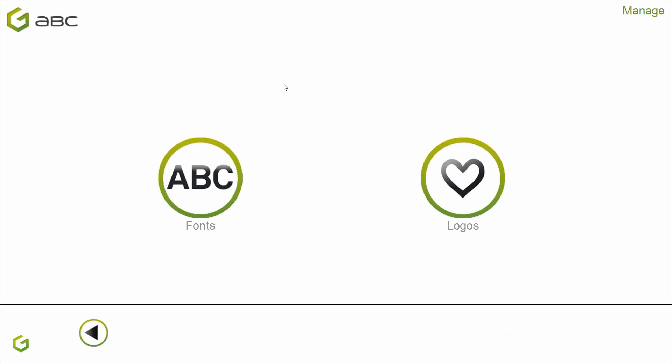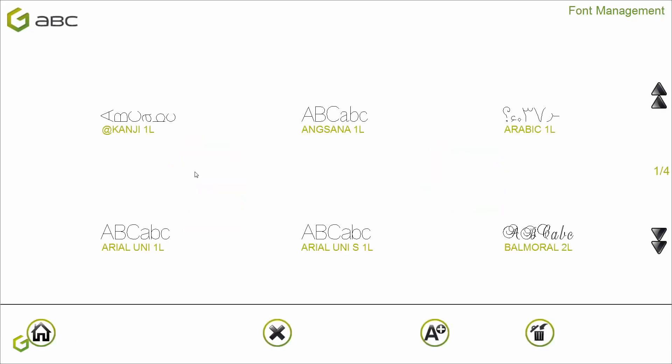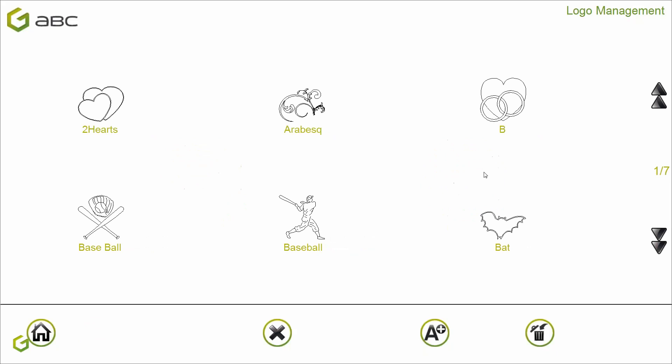Here you can add or remove fonts for the ABC software. You select fonts here and logos here. By clicking on the little A-plus sign, you can add a font. You need to put the fonts you want to add at the root of a USB key and plug it into your PC — the font will be automatically added. Same for logos: put the logos on the USB key and click the A-plus sign. Logos should be in HPG format and the software will automatically convert them into LOG format.